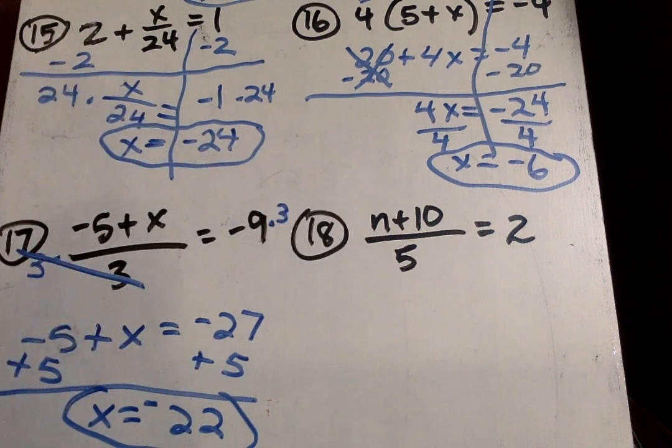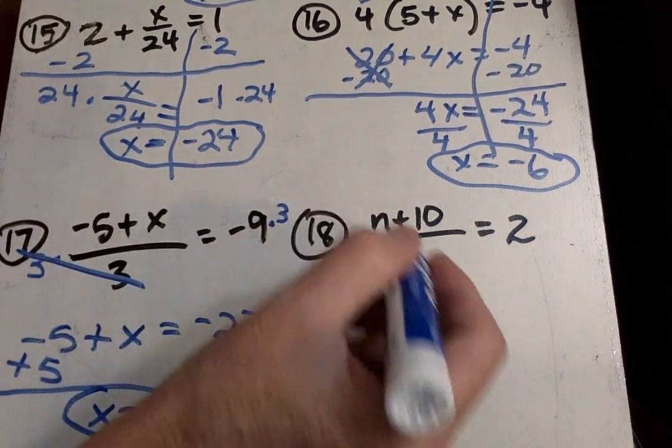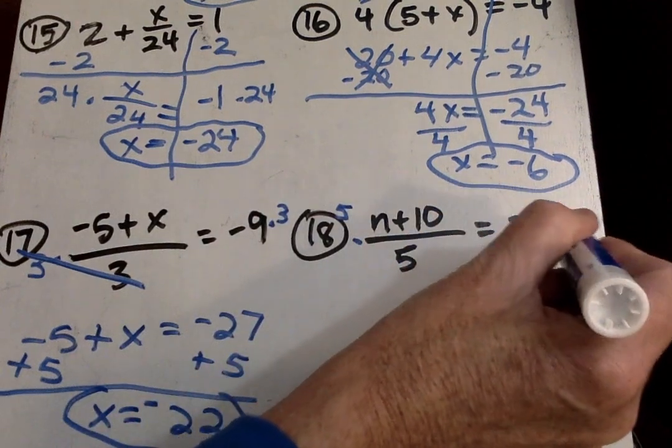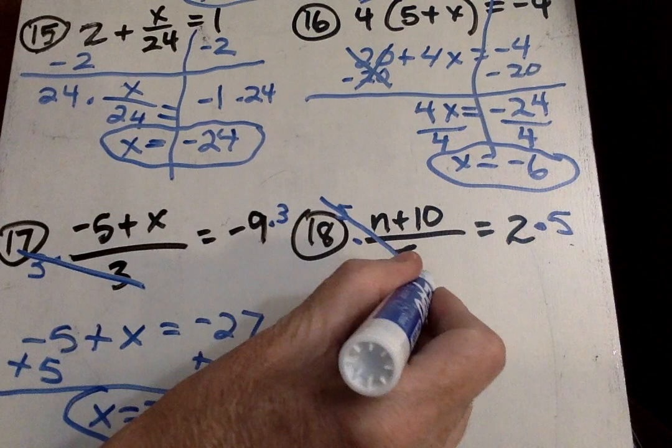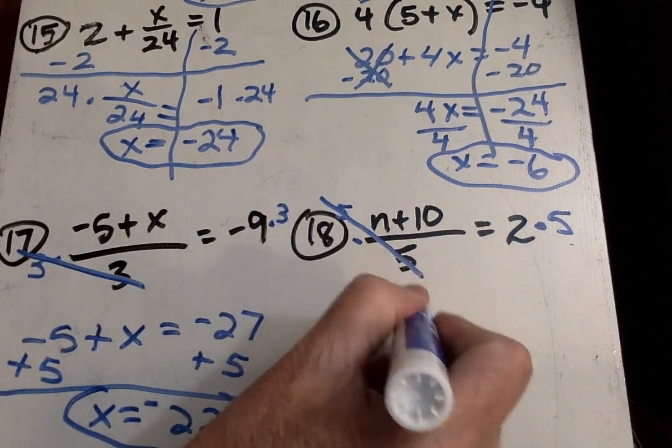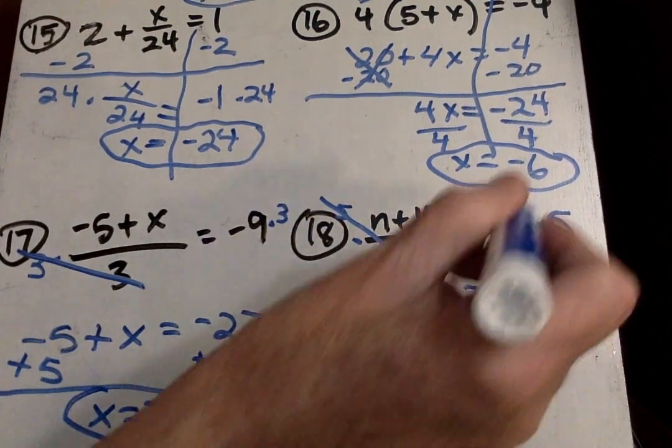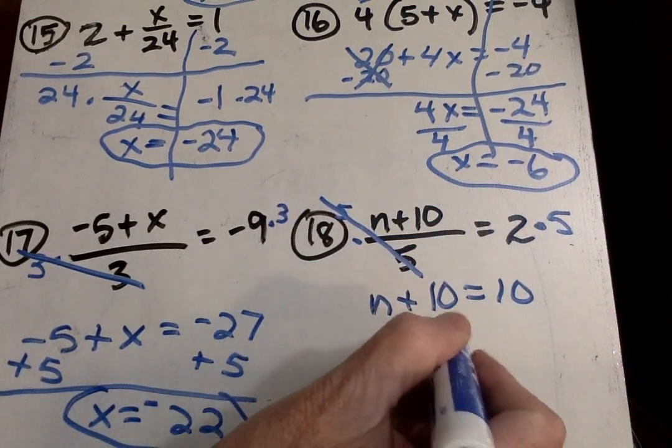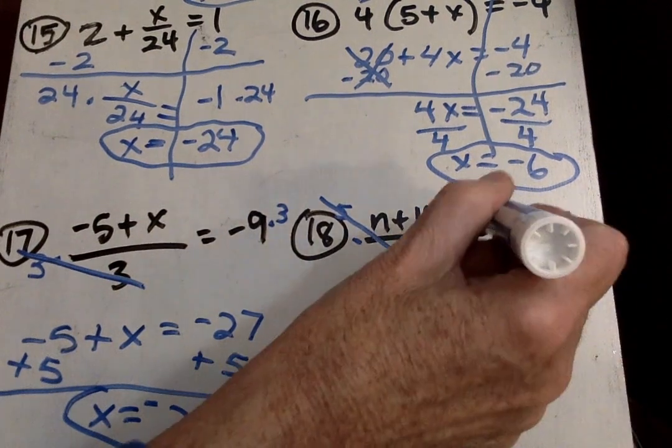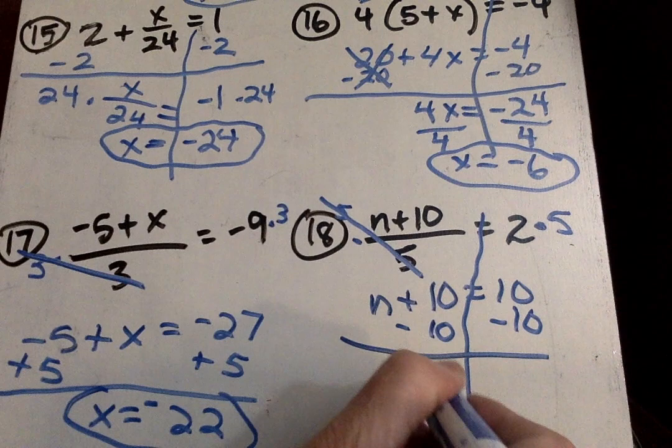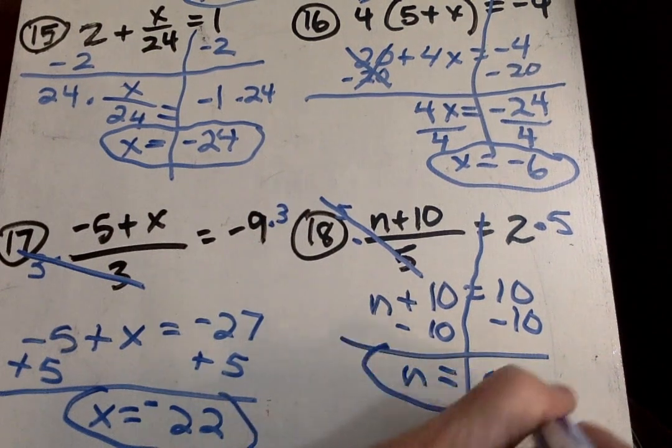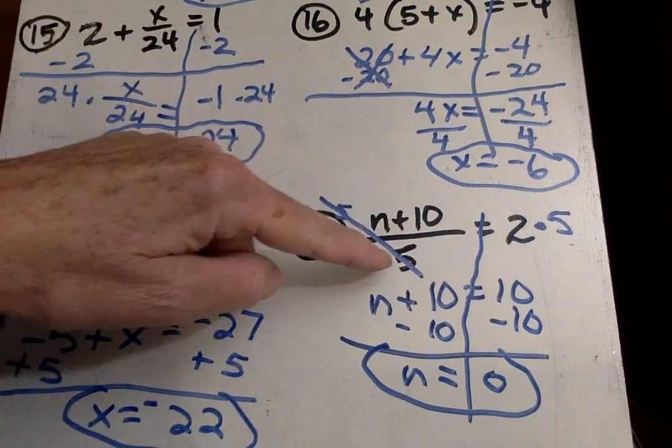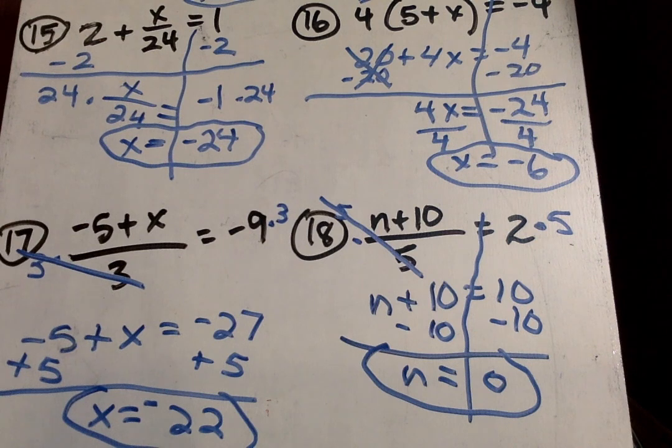Now we're going to go ahead and do this one over here. This time this is divided by 5. So I'm going to multiply this side by 5. Multiply this side by 5. That's hard to see, but it cancels with that 5. And I'm left with N plus 10 equals 5 times 2 is 10. Then I subtract 10. Now I like to put the number back in, the original equation. 0 plus 10 is 10, divided by 5 is 2. So that way I can check it.